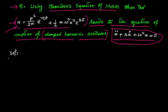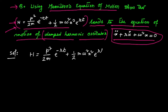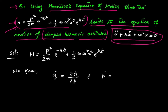The Hamiltonian given here is H = P² / (2m) · e^(−Rt) + (1/2) m ω² x² · e^(Rt). We know Hamilton's equations: q̇ = ∂H/∂P and Ṗ = −∂H/∂q.